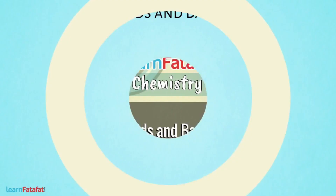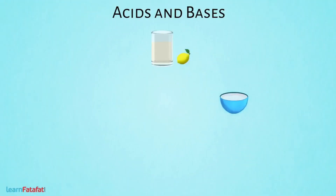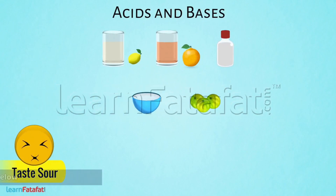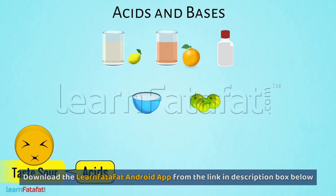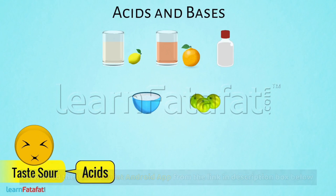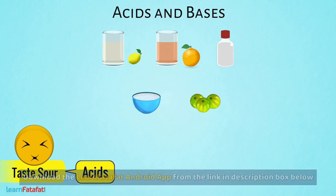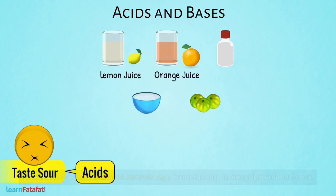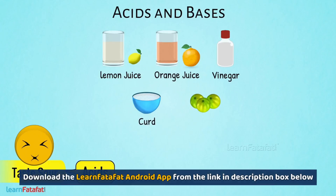There are some substances which taste sour. Such substances are acids. For example, lemon juice, orange juice, vinegar, curd, amla, etc.